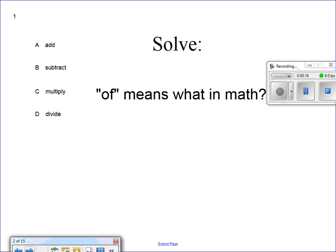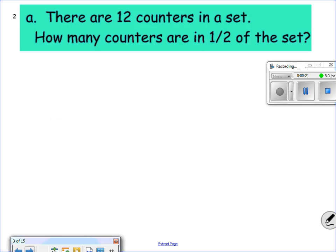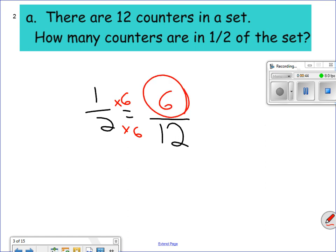Of means what in math? A lot of times, not all the time, but a lot of times of will mean to multiply. So keep these things in mind. First question says this: there's 12 counters in a set. So if there's 12 in the set, 12 is my whole, right? So 12 will be my denominator. How many counters are half of the set? Well, half equals 1 into 12 times 6, which is 6. 6 would be half of the set, right? 6 is half of 12.